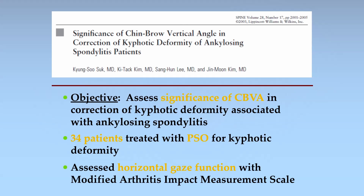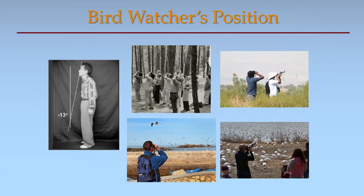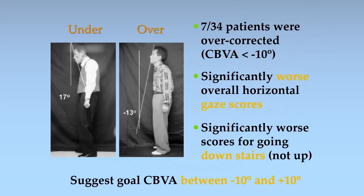Sook and colleagues showed the significance of chin-brow vertical angle. They looked at 34 patients treated with PSO for kyphotic deformity and assessed horizontal gaze function based on the modified arthritis impact measurement scale. They significantly improved the chin-brow vertical angle from 96 degrees to 17 degrees, leaving patients somewhat undercorrected overall, but these patients still had very good horizontal gaze scores. For those undercorrected even a little, they had a bird-watcher's position, forced to look upright. Interestingly, patients even slightly overcorrected had significantly worse horizontal gaze scores, especially for going down stairs, as they couldn't see their feet.